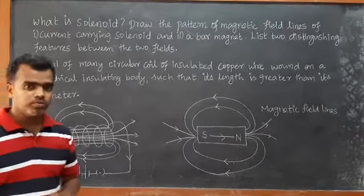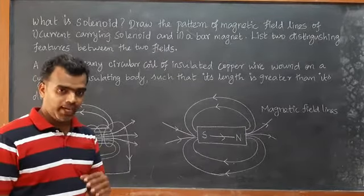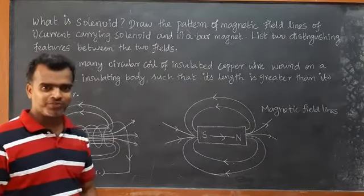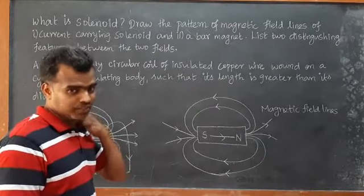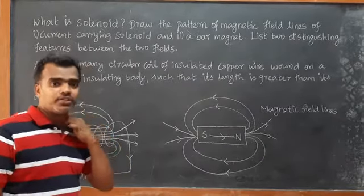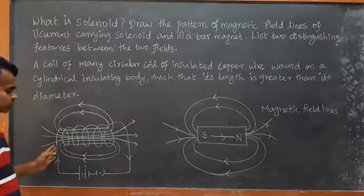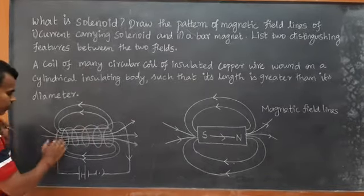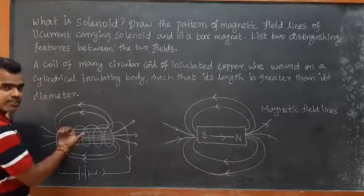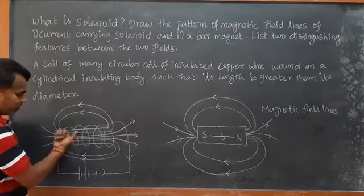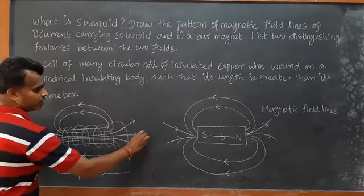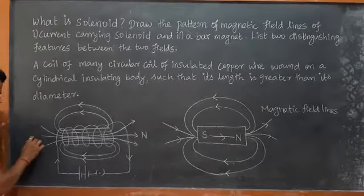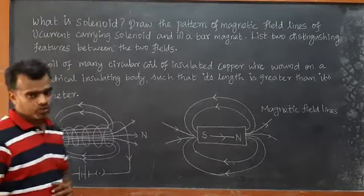Now, which end is the north pole and which is the south pole? If current passes from the positive terminal to the negative terminal in a particular direction, one end acts as the north pole and the other as the south pole, as we discussed in an earlier class.